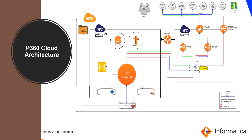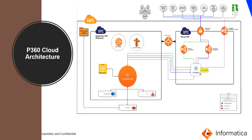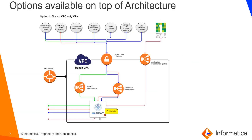Looking at the options available on top of the architecture: Option 1 is using a transit VPC with VPN only. The traffic — whether a PIM internal protocol TCP connection shown in green, or REST/HTTPS shown in blue and red — hits the gateway, requiring users to have a VPN gateway to access the VPC. They go through the network load balancers before reaching the P360 server, and HAProxy may or may not be used for IP whitelisting.